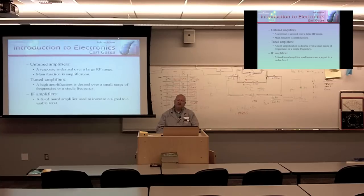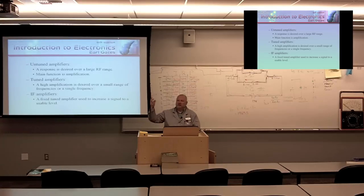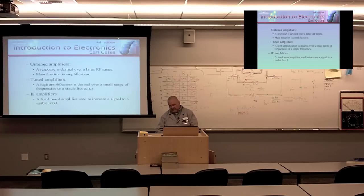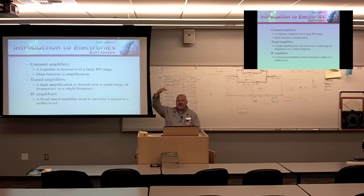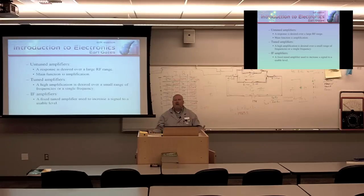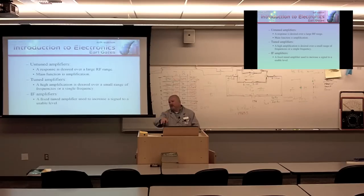One of the first things we want to do in any type of radio frequency receiver is convert the radio frequency — RF — to what's called IF, intermediate frequency. Because once we convert it to IF, we get it to a frequency that's more user-friendly, and we can use general generic components that are readily available to process the signal, extract the intelligence, demodulate the signal, and amplify the signal.